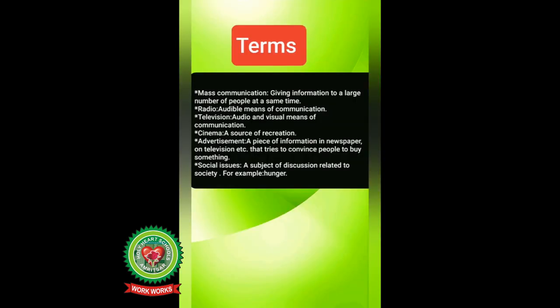Today we will learn about mass means of communication: radio, television, internet, cinema, and advertisement. Before reading, let's discuss key terms. Mass communication means giving information to a large number of people at the same time. Radio is an audible means of communication. Television is an audio and visual means of communication. Cinema is a source of recreation. Advertisement is a piece of information in a newspaper or on television that tries to convince people to buy something.